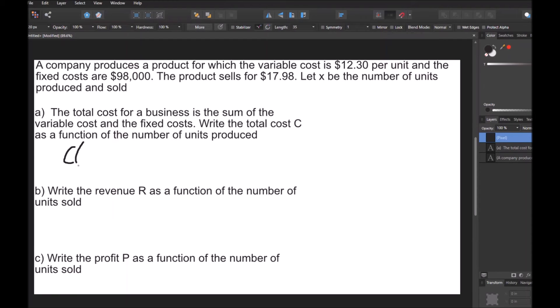So I'm going to do C(X) because X is the number of units produced. C(X) is going to be the total cost, or it's going to be the variable cost plus the fixed cost. So the variable cost is going to be 12.3X. And the reason it's X is because it's a variable cost, it depends on how many units are sold. So it's going to be 12.3X plus $98,000. And that's going to be your answer for part A.